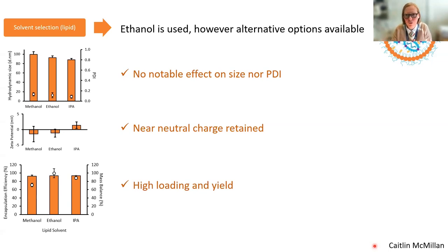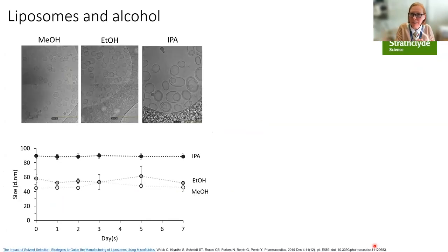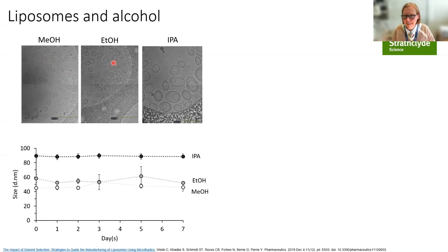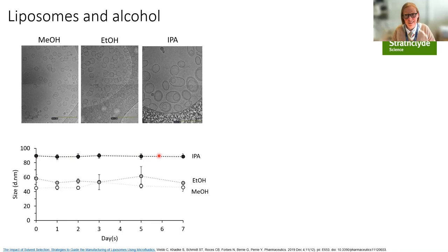But if you relate that back to liposomes, it's interesting because this has shown us that all the learnings we have from liposomes don't necessarily directly apply. What we see is if we make liposomes with methanol versus ethanol versus IPA using microfluidics, we can see a size increase. You can see it in the cryo-EM — with IPA you get two, sometimes three or four bilayers. The methanol ones sit around 45–50 nanometers, ethanol around 60, and IPA around 90. So that switch in solvent gives us flexibility in controlling particle size for liposomes.